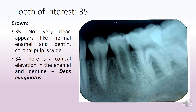The tooth of interest we will look at first is tooth 35. The crown of tooth 35 is not very clear and can pass off as normal enamel and dentine, but we notice that the coronal pulp is very wide.